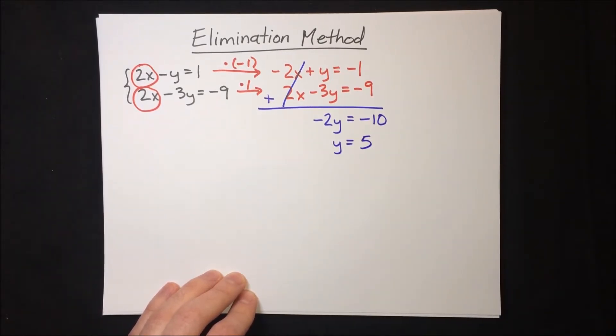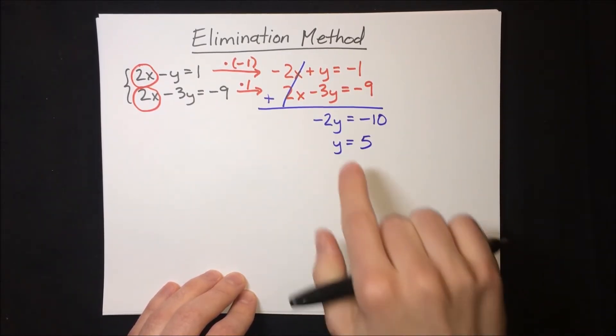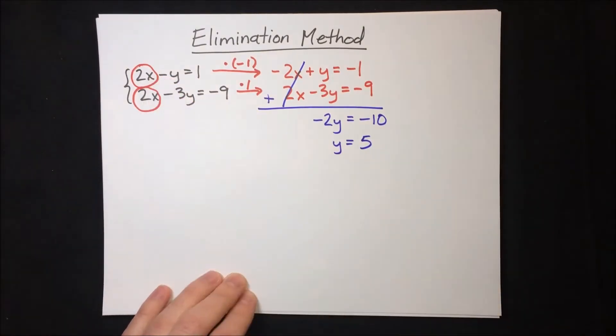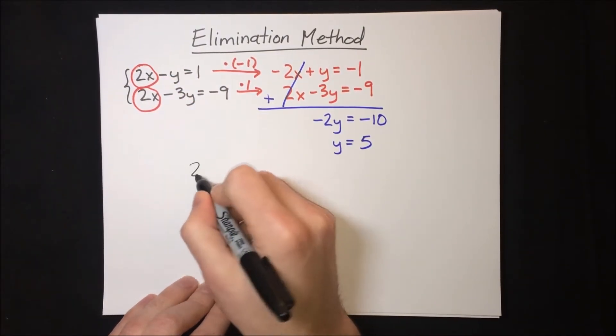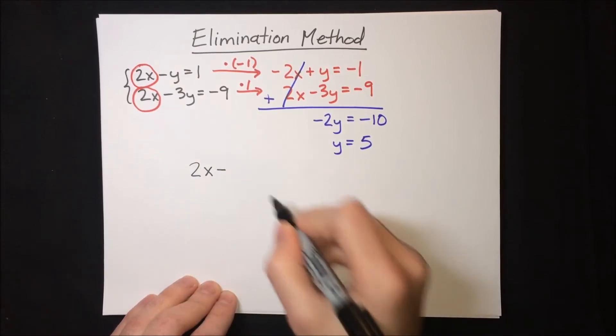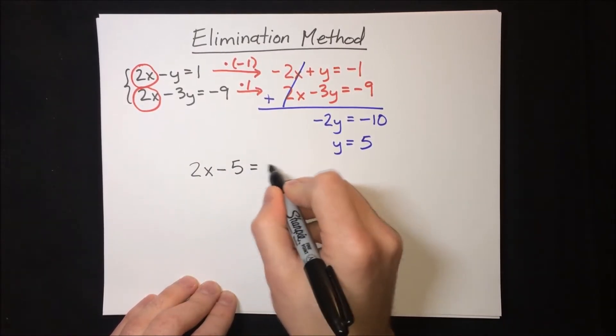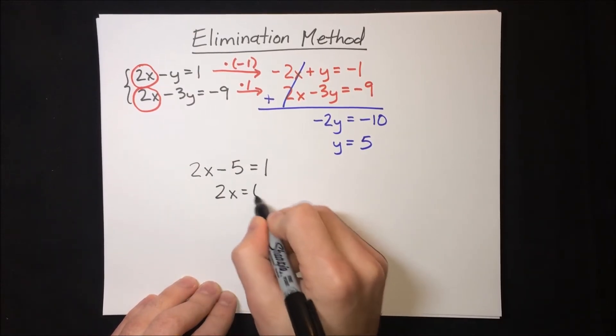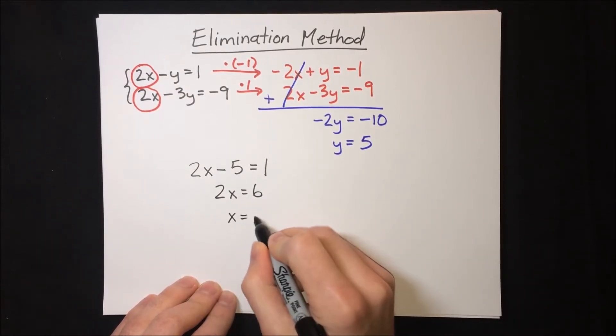Now, we just need to solve for x. We can do that by plugging y back into one of the equations. Let's say the top equation. So 2x minus 5 equals 1. Solving for x, we get 2x equals 6, so x equals 3.